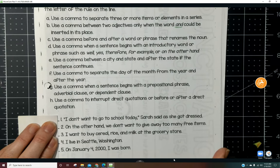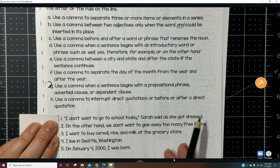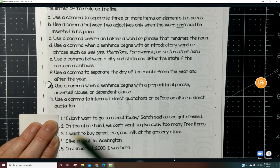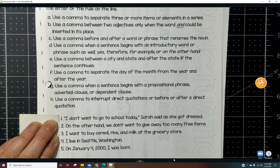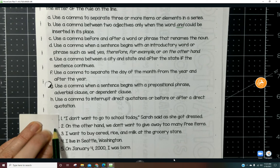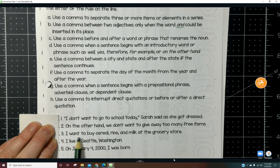So down here our sentences are: 'I don't want to go to school today,' Sarah said as she got dressed. So write the letter on the line for the rule up here that you think applies there. Number two: 'On the other hand, we don't want to give away too many free items.' So again, choose the letter, write it on the line for the example sentence there for number two.